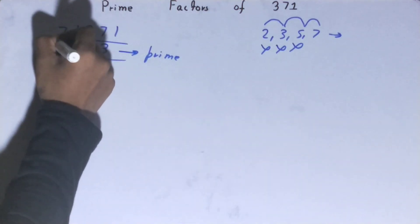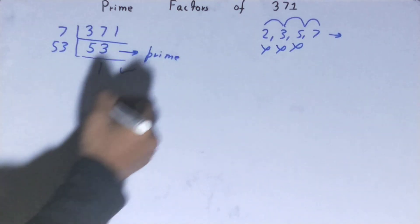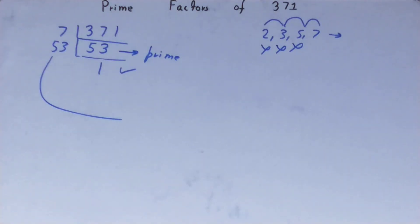So to divide this 53, you need 53 on the left-hand side, and when you do so, you'll be getting 1. Once you get 1, the work is done.